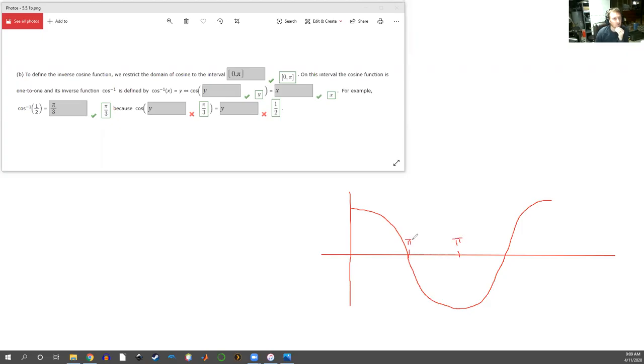So we need to find an interval where this is one-to-one, and you can pick lots of different ones, but there are some standard choices that are made. We like to keep things centered at zero as math people.